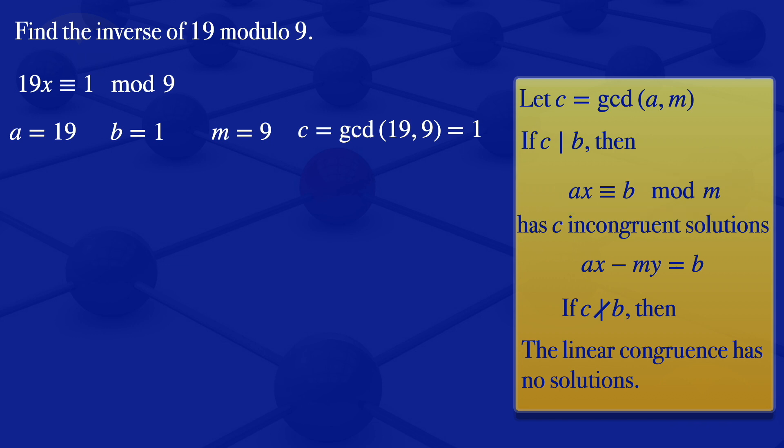And to get that incongruent solution, we will use this equation here, ax minus my equals to b. Substitute the values of the a, the m and the b that we have, we would have 19x minus 9y is equals to 1.